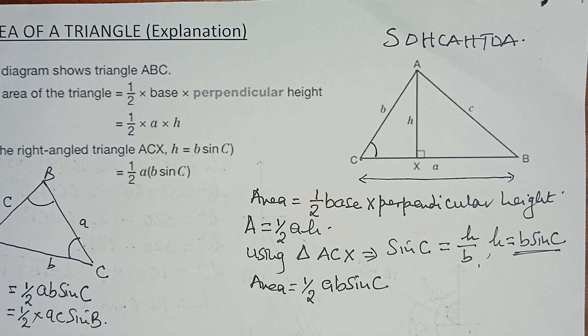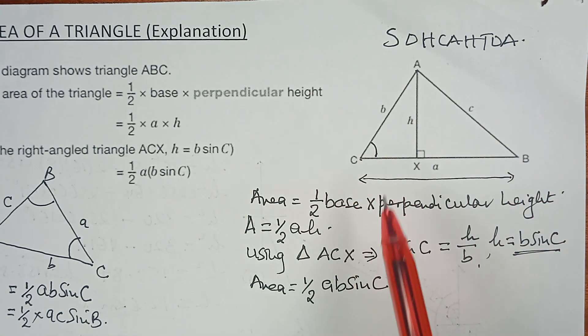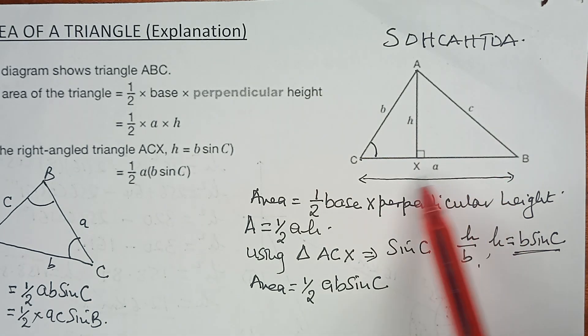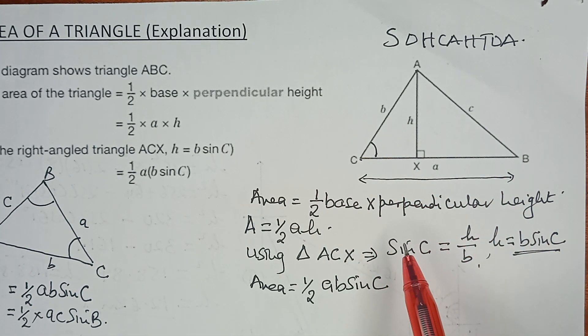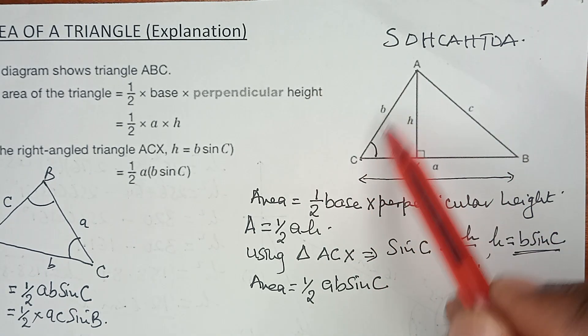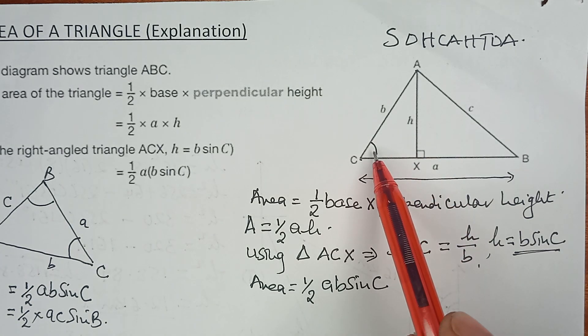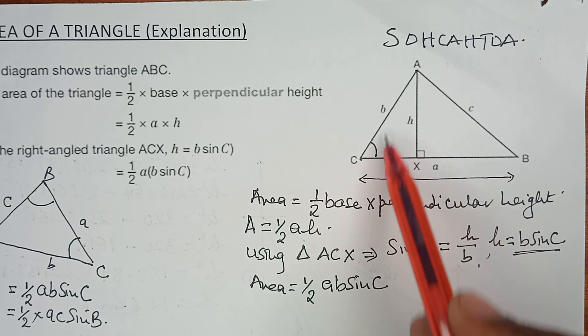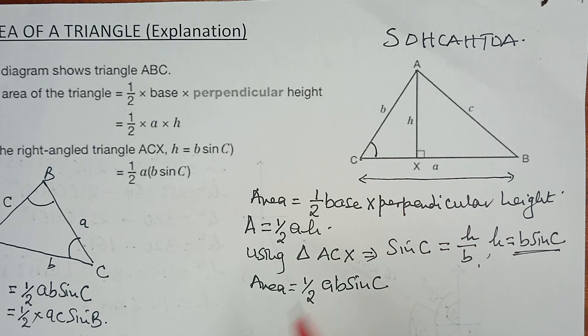And that is how this formula comes about. In other words, the area of the whole of this triangle ABC is a half times A, the whole of this A, times this side B, times the sine of the angle included between the two used sides.